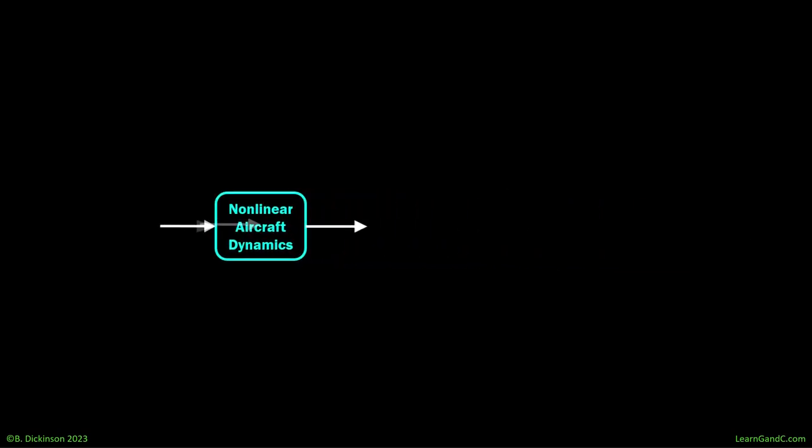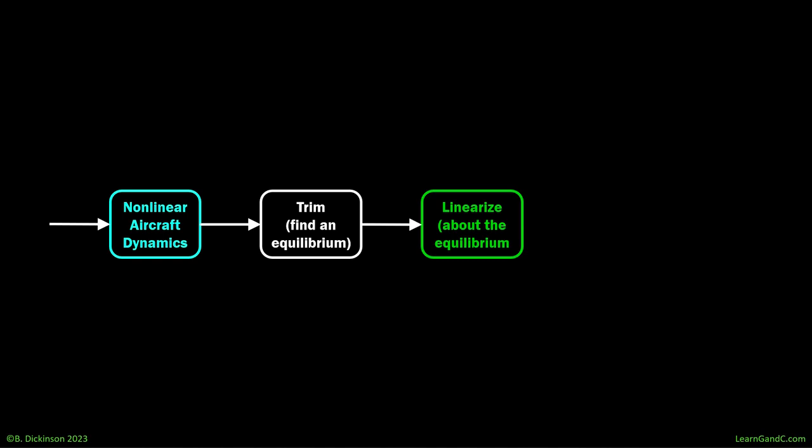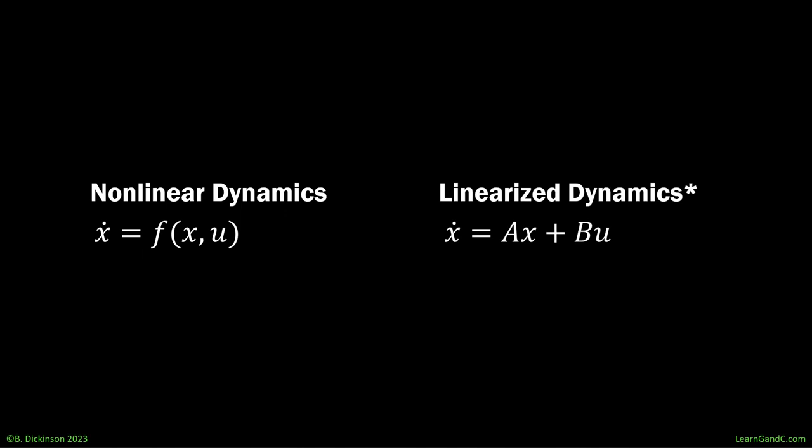To obtain the linearized dynamic models, we start with the nonlinear aircraft simulation. Then we find an equilibrium or trim state and linearize the dynamics about that equilibrium. This produces a linear model that can be tuned with linear control methods as you have seen in previous sections of this course. Mathematically, we have our nonlinear dynamics of the form ẋ = f(x,u), and then we seek the linearized dynamics ẋ = Ax + Bu, so that in this linear form, we can apply the wide range of available linear control methods and analytical tools to tune the controller to adequate specifications.